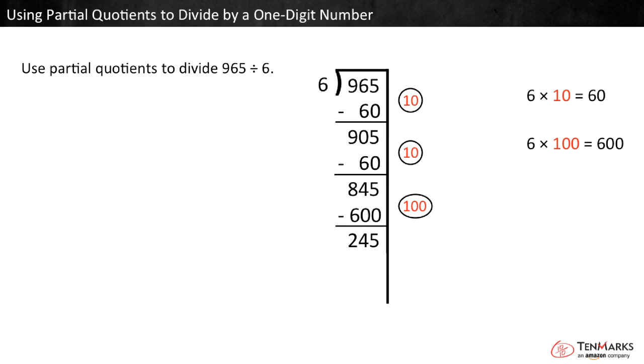245 are left. How many 6's are in 245? I remember that 6 times 4 equals 24. So, 6 times 40 equals 240. There are 40 more groups of 6. Write the partial quotient 40 to the right, then subtract 240.